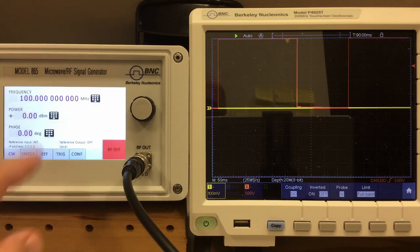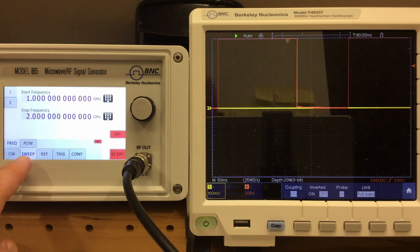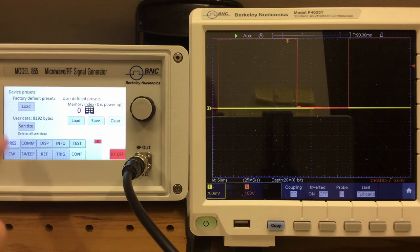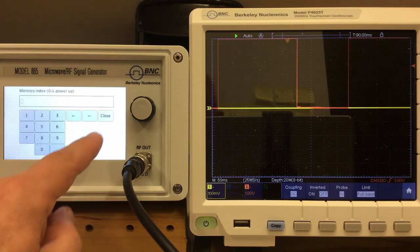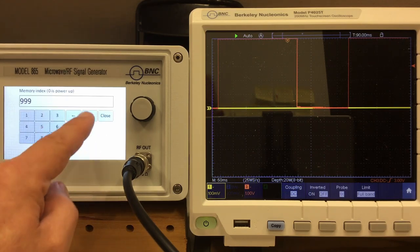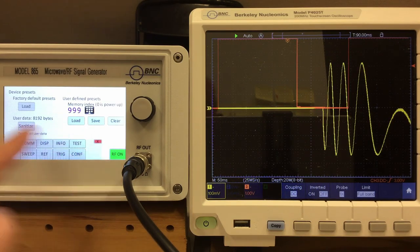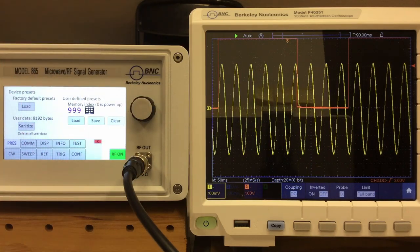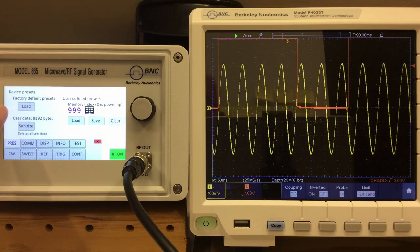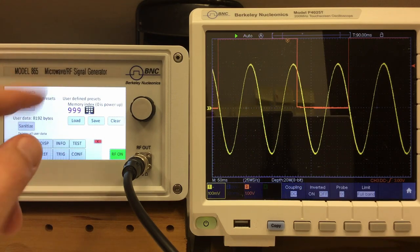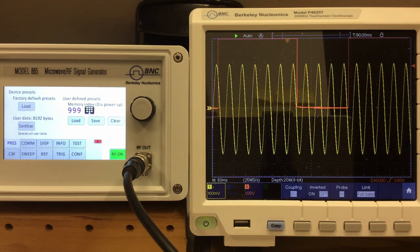Our sweep is gone, and our trigger is back to normal. But if I go to configuration, and then select setting nine nine nine nine, and say load, everything comes back on. And you can also load the factory defaults, and you can completely sanitize everything you have stored in memory.